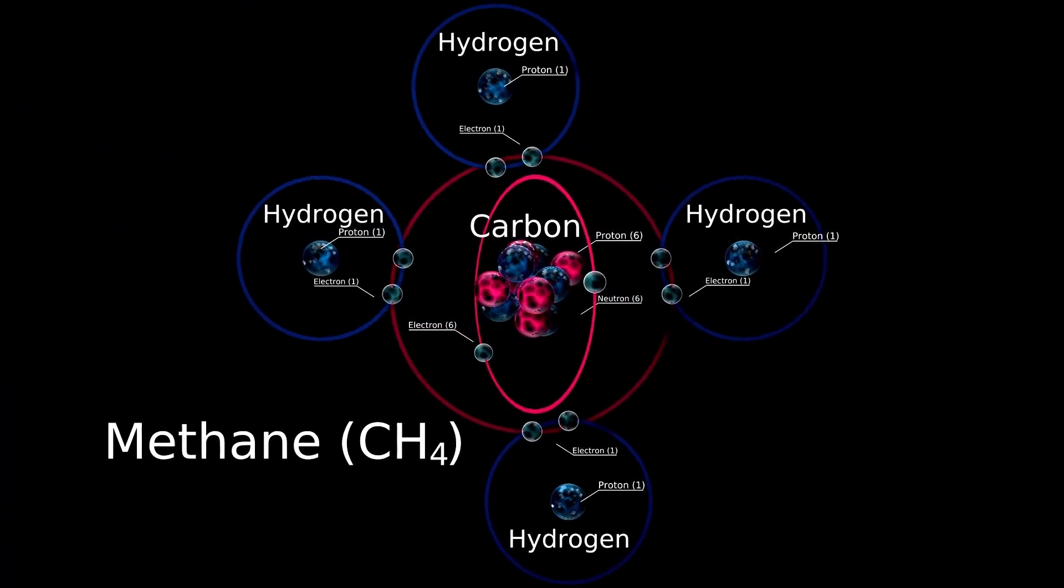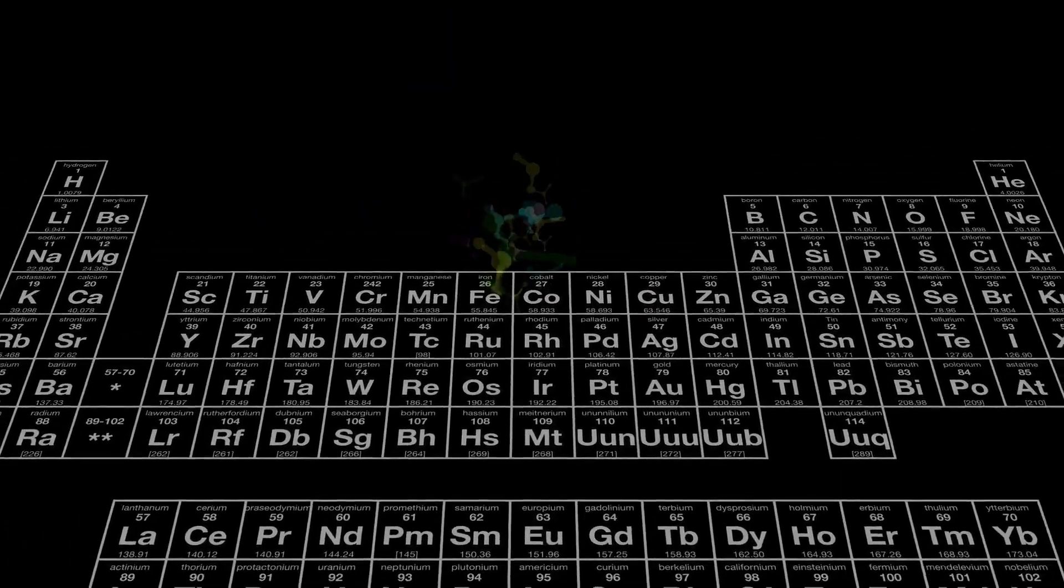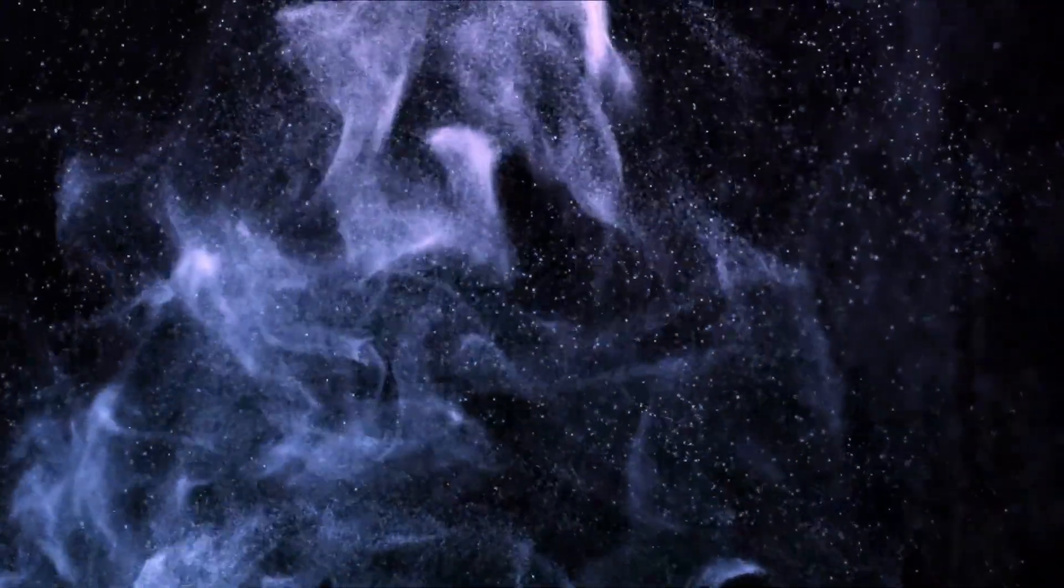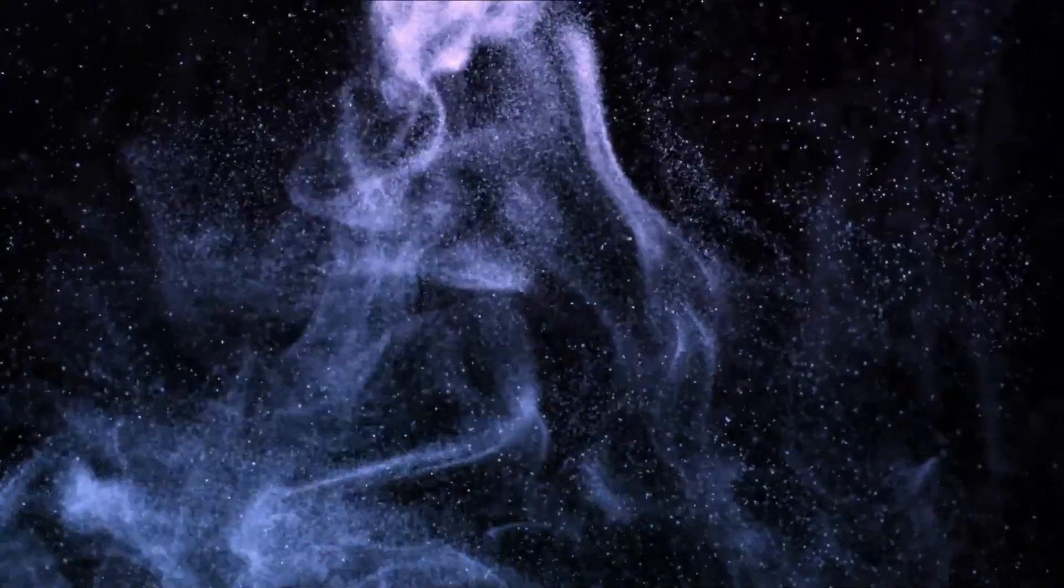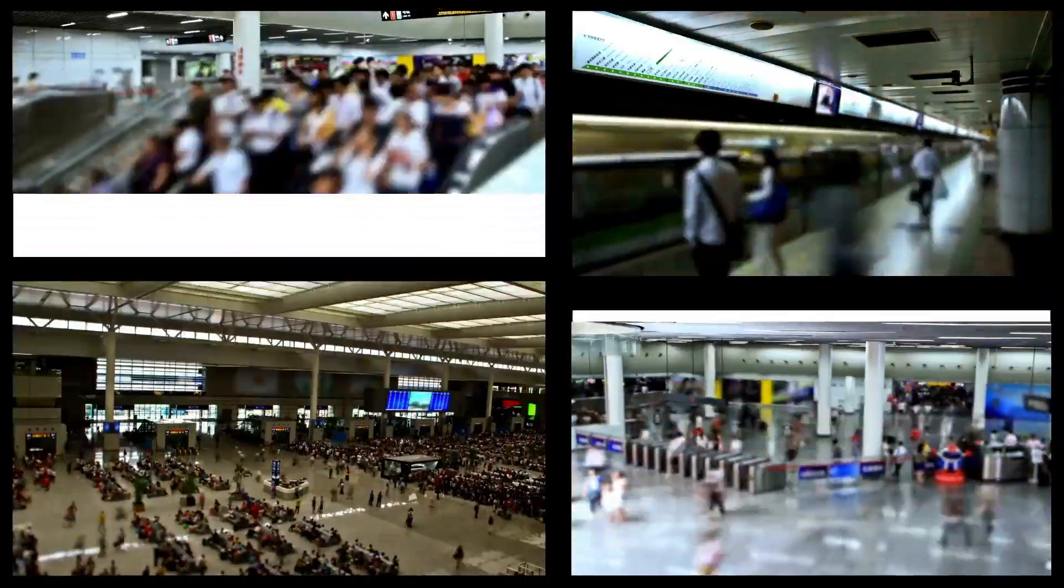Despite being nearly four times farther from the sun than Earth, 3i Atlas is unusually bright. Too bright. If it were a typical rock, it would have to be massive, 20 kilometers wide, to reflect that much light. But it doesn't seem to have the mass.